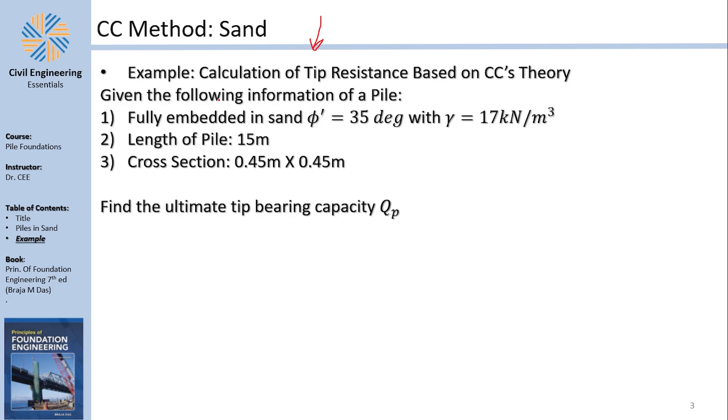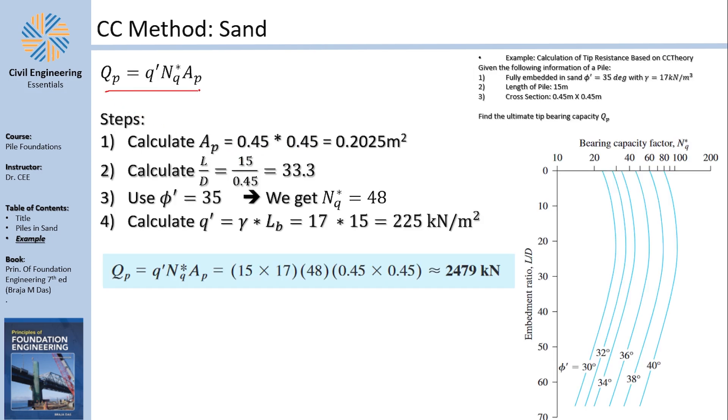Here, the same parameters are given. He wants you to find the tip bearing capacity ultimate of a pile with 35 degrees, 17 kN per cubic meter, 15 meter length, and rectangular cross section. Now here, once again, it's just one equation and a very simple one, by the way. For it, you need to find AP and you need to find the embedment length, because from the embedment length you can find the value NQ.